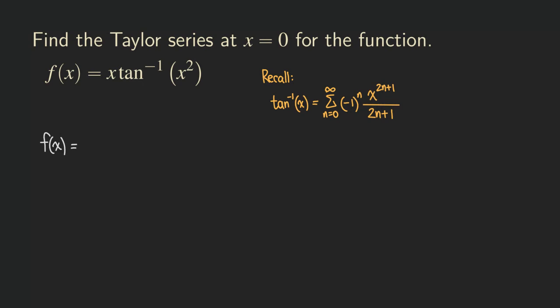So what we have right now is that f of x is equal to x times the summation. Then the alternating factor, and now this x is going to be replaced by x square. So we have the x square, and then the exponent on the outside is still 2n plus 1. Denominator here is 2n plus 1.